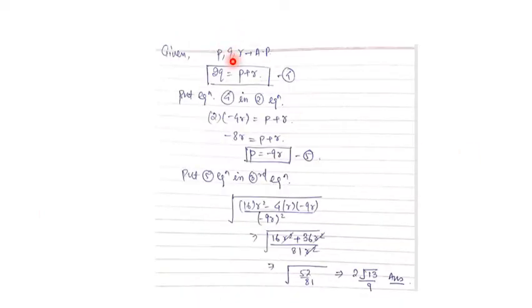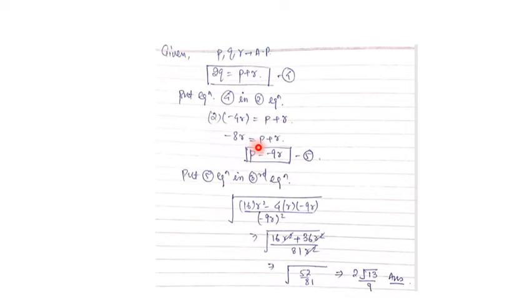Since p, q, r are in AP, we have 2q = p + r, our fourth equation. Substituting q = -4r gives 2(-4r) = p + r, so -8r = p + r, giving p = -9r as our fifth equation. Substituting p = -9r into the third equation for |alpha - beta|, the r² terms cancel from numerator and denominator, and we finally get |alpha - beta| = 2√13 / 9.